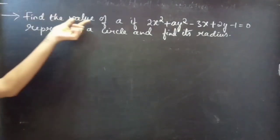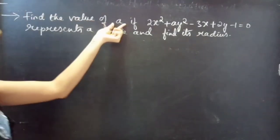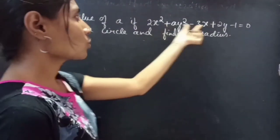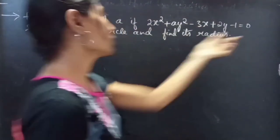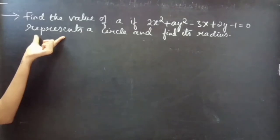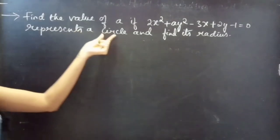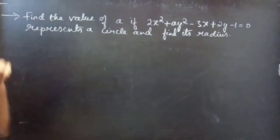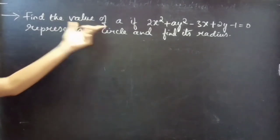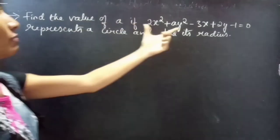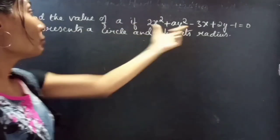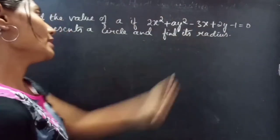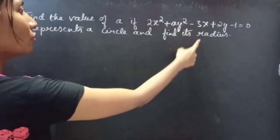Problem: find the value of A if 2x squared plus Ay squared minus 3x plus 2y minus 1 equals 0 represents a circle, and find its radius. So, we are asked to find the value of A if this represents a circle and also to find its radius.